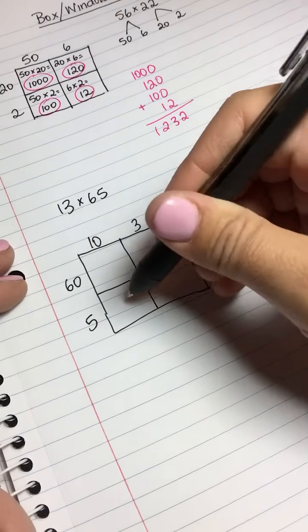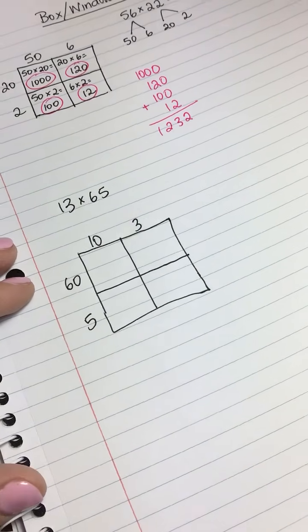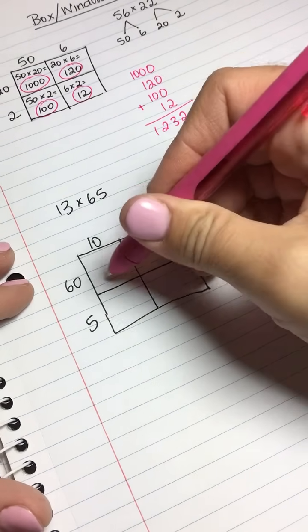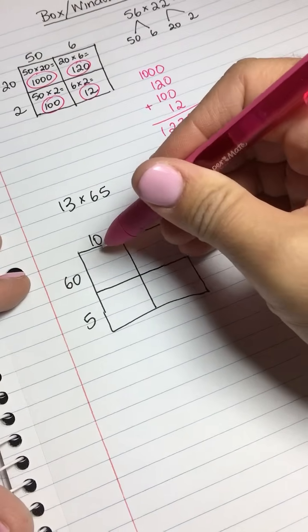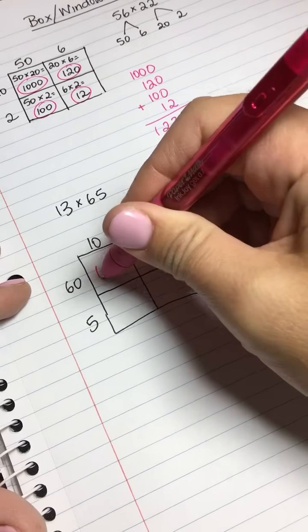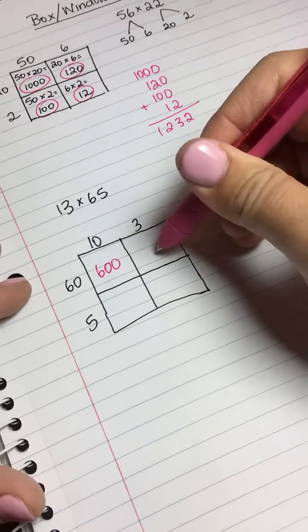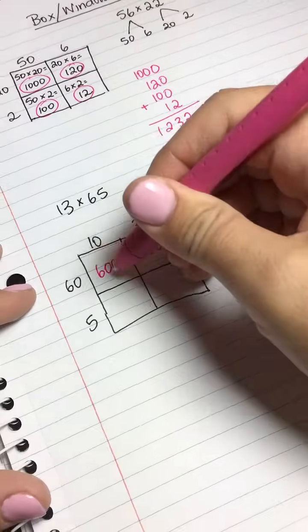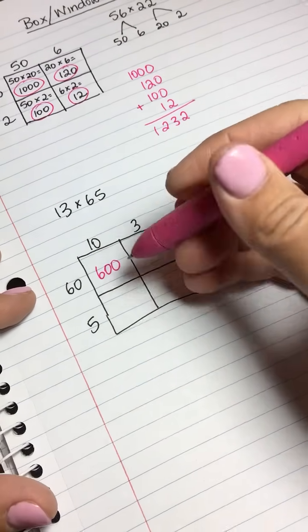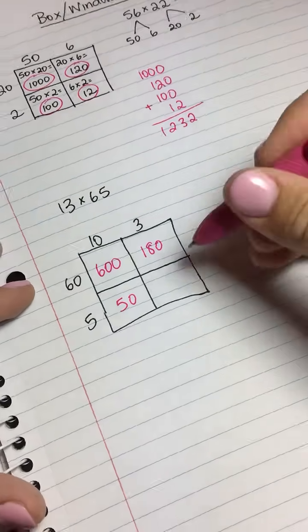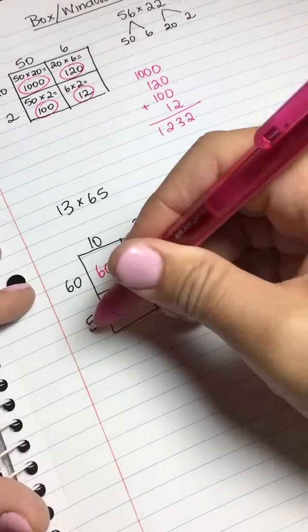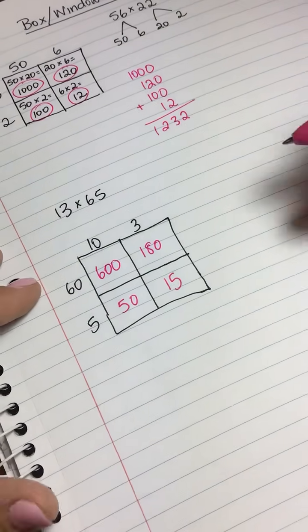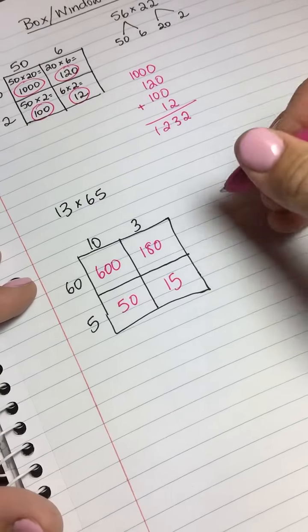Now we are going to find the areas of each smaller box and add them together at the end. This time I'm not going to write the entire equation inside—we're just going to multiply and write the smaller product. In this box, we'll multiply 60 times 10, which gives us 600. In this box, we multiply 60 times 3, which gives us 180. In this box down here, we multiply 10 times 5, which gives us 50, and in this box we multiply 3 times 5, which gives us 15.